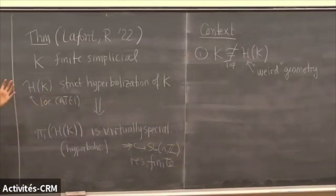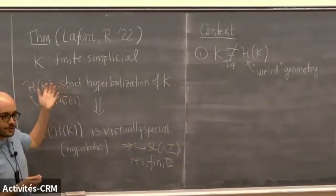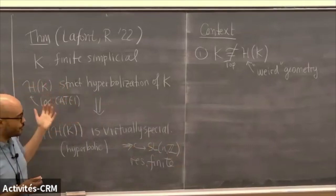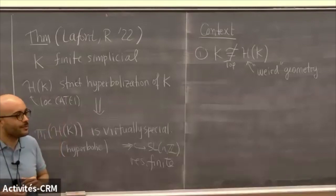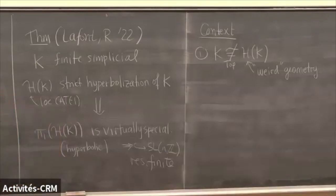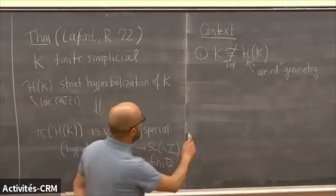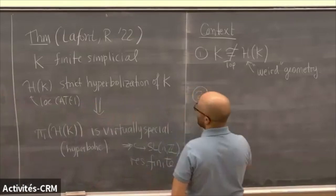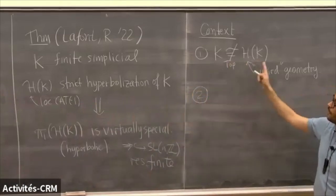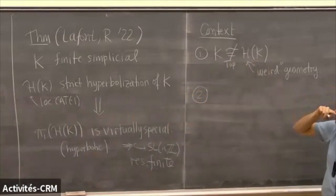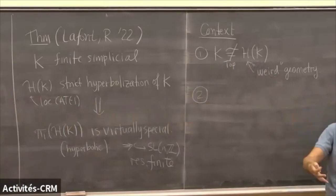One point of view of the talk is that these are interesting subgroups of GL_n(Z) with some geometry — fitting the theme of the workshop. The second thing I wanted to say in terms of context is that here, although I'm changing the topology of K very much when doing this operation, I'm sending manifolds to manifolds. So if you give me a manifold, the construction will give you a manifold.